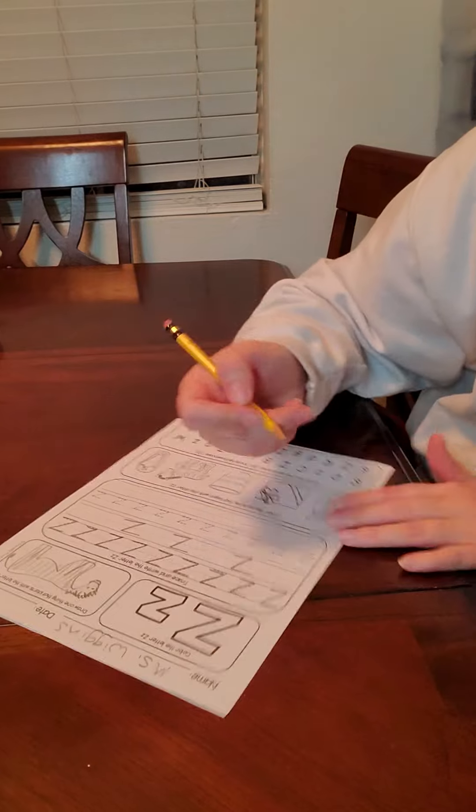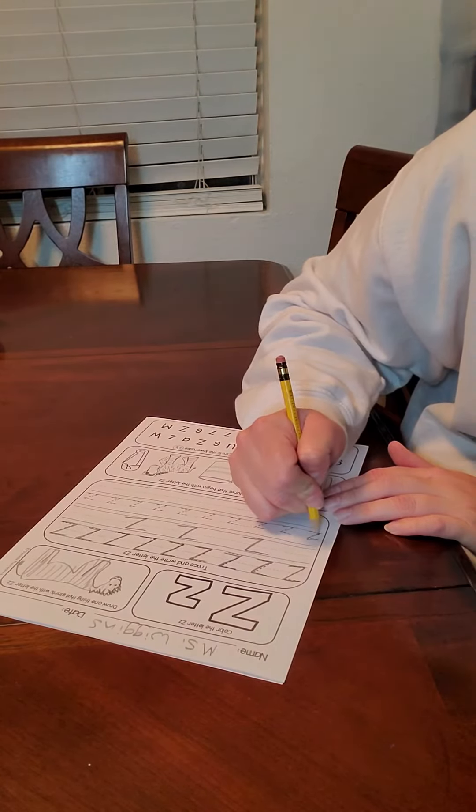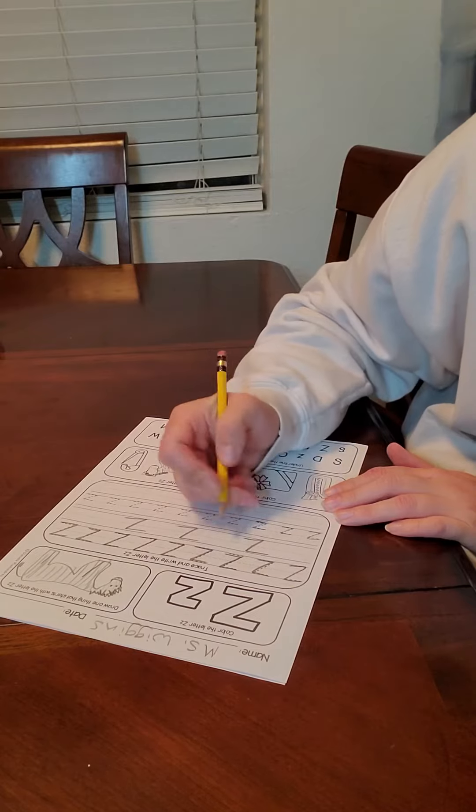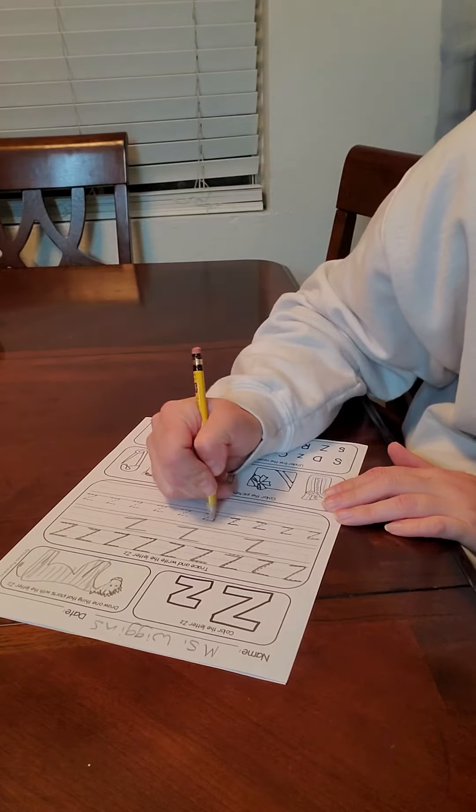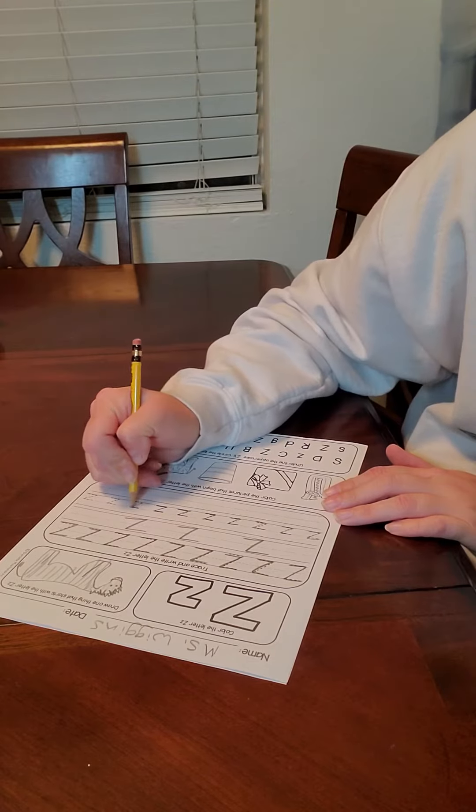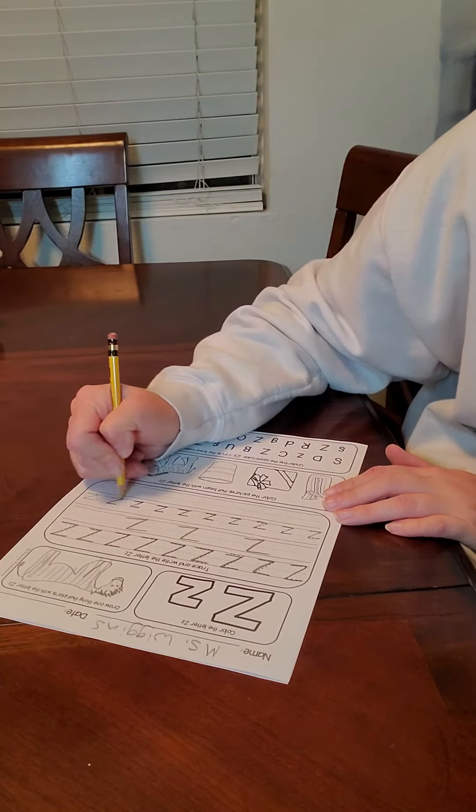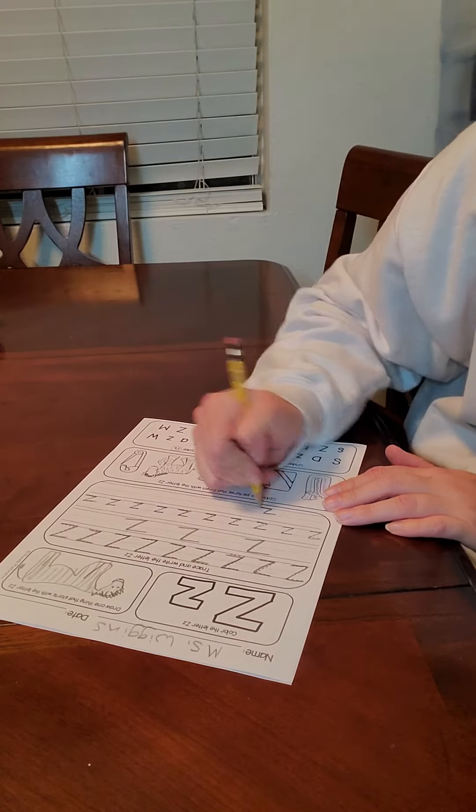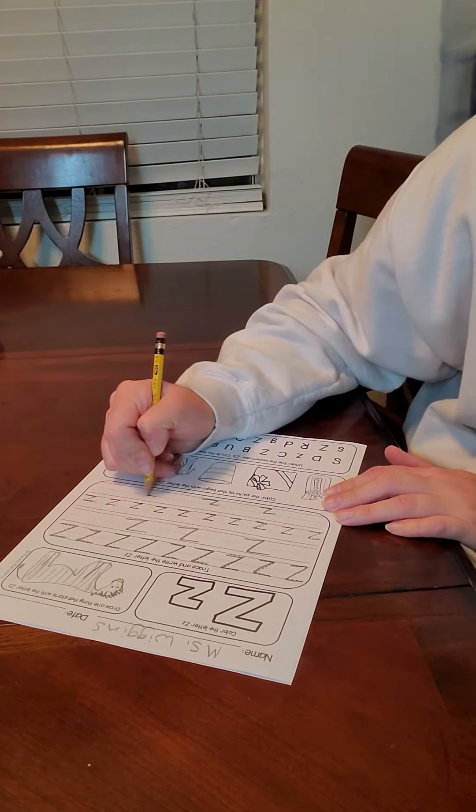All right. Now, go ahead and trace your lowercase z's, which is the same as an uppercase Z, only keep it below the dotted line in the middle. So it's a straight line along the dotted line, a diagonal line down, and a straight line across the bottom. Go ahead and write three of them all by yourselves.